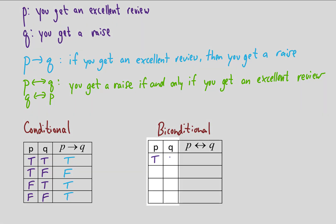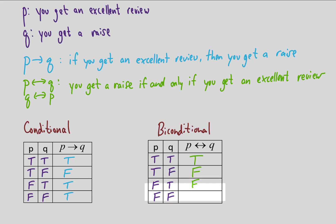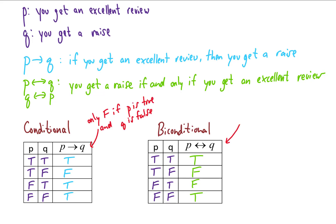We put in all possible values for p and q and analyze the biconditional row by row. In the first scenario, you get an excellent review and you get a raise, so the biconditional is true. In the second row, you get an excellent review but no raise — that makes it false. In the third row, you don't get an excellent review but you do get a raise, making the if-and-only-if statement false. In the last row, you didn't get an excellent review and didn't get a raise, so the boss's statement holds — it's true. The conditional is only false if p is true and q is false, and the biconditional is only true if p and q match.